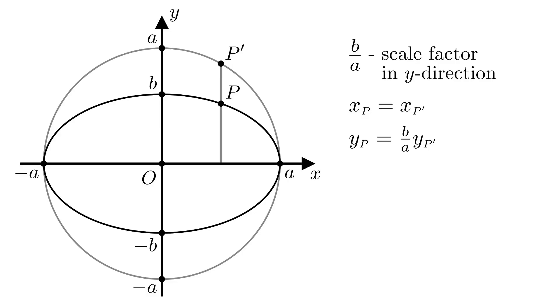We'll now use the fact that p' is on the circle of radius a. If we call this angle theta, then the x-coordinate of p' is equal to a times the cosine of theta, and the y-coordinate of p' is equal to a times the sine of theta.